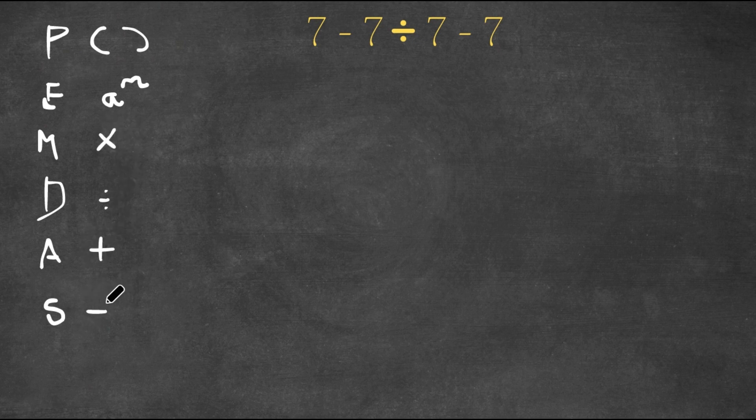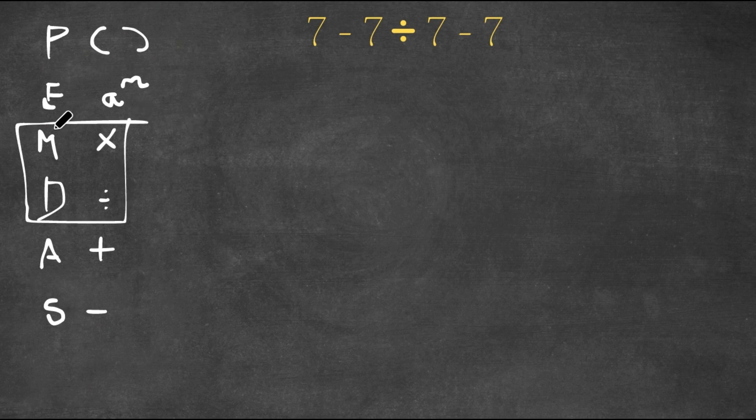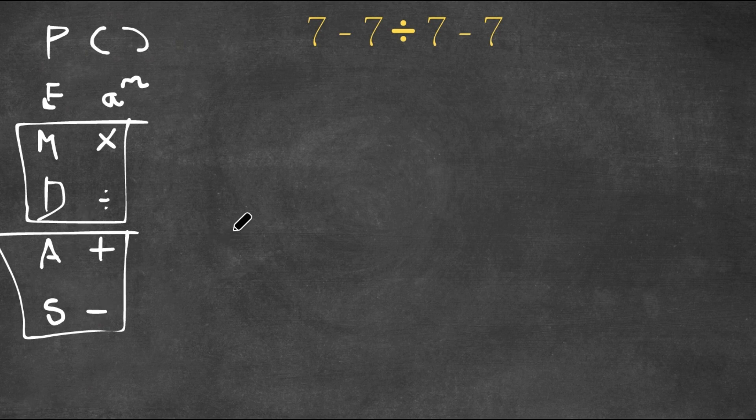However, multiplication and division, as well as addition and subtraction, depend on the order. So it's actually multiplication and division together, and then addition and subtraction together. Both of these pairs work the same way depending on order, so whichever one comes first.